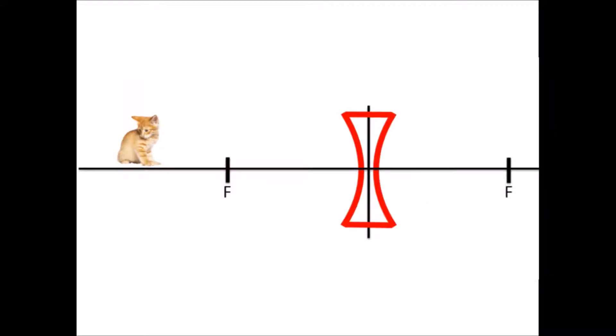This is what a concave lens looks like in cross-section. Like a mirror, we draw a horizontal axis and a vertical pole through it. Notice the two foci, both labelled F. If it helps, you can call them F1 and F2.